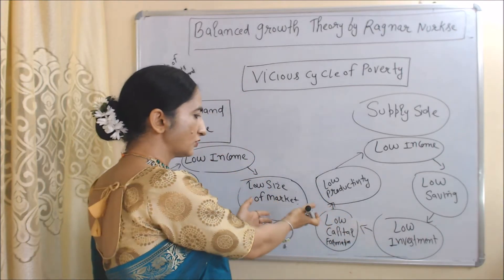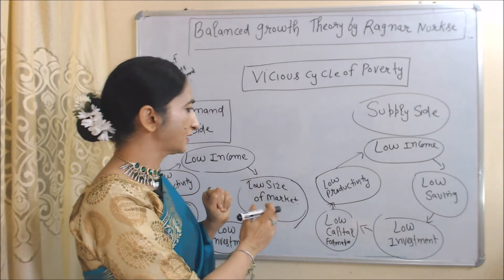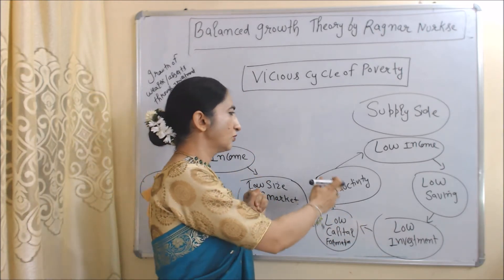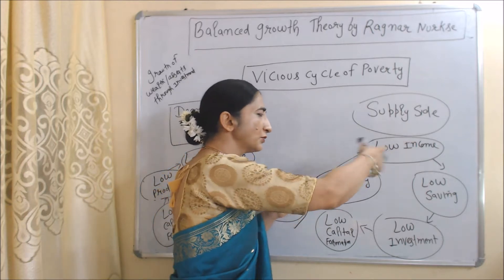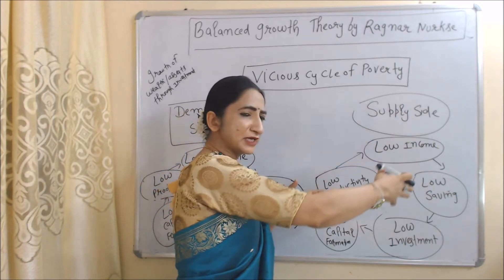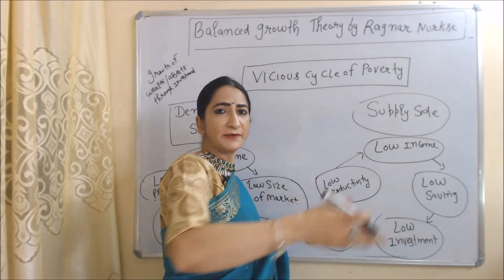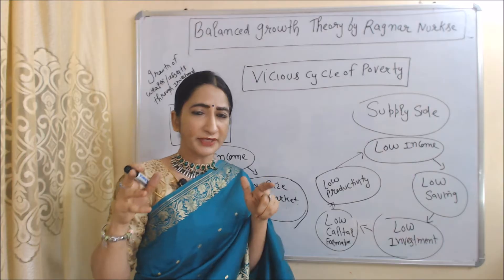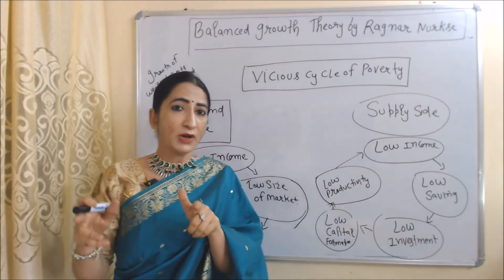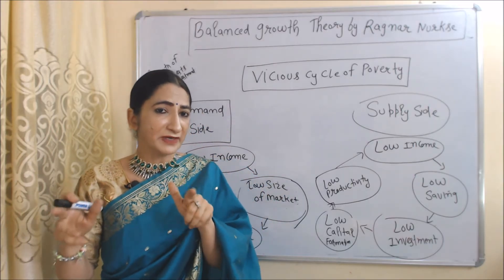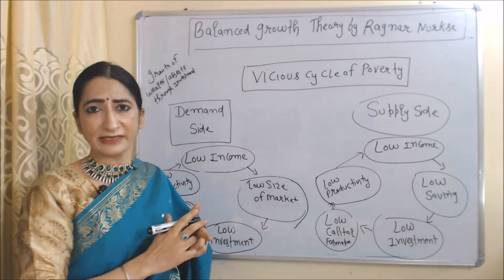Low investment leads to low capital formation, and low capital formation leads to low productivity, and low productivity leads to low income. This cycle will continue to run. According to Nurkse, in order to grow, underdeveloped countries must break this cycle.